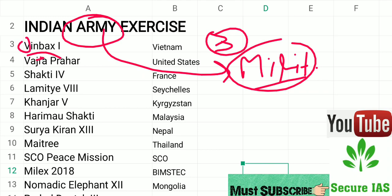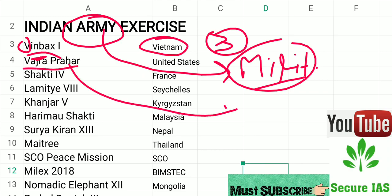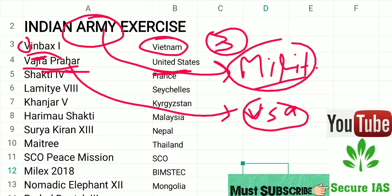The first exercise is Windbags — here W stands for Vietnam and I stands for India, so this exercise is between Vietnam and India. The next is Vajra Parihar — using a mnemonic, VA looks like UA, and putting S in between gives USA, so Vajra Parihar is connected with the United States.